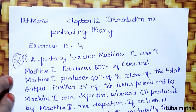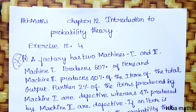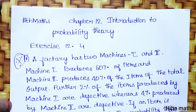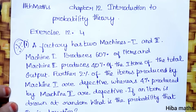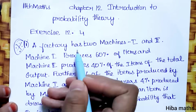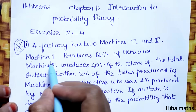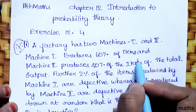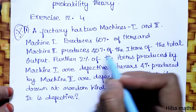Hello Students, welcome to Hibamax 11 Standard Max Chapter 12 Introduction to Probability Theory, Exercise 12.4 First Question. A factory has 2 machines: Machine 1 produces 60% of items and Machine 2 produces 40% of items.